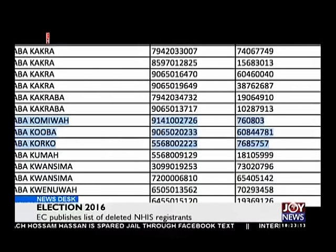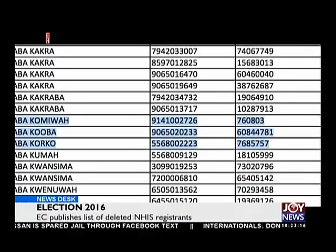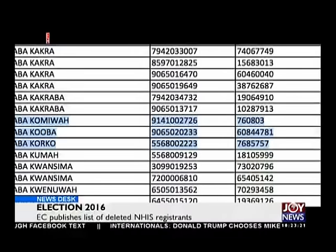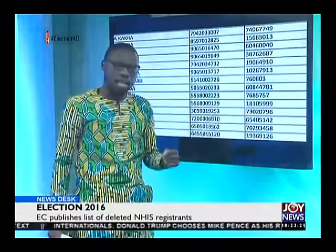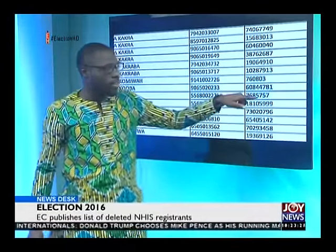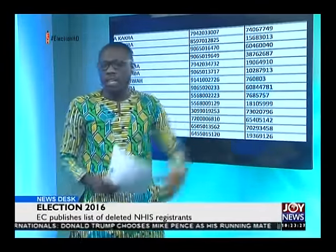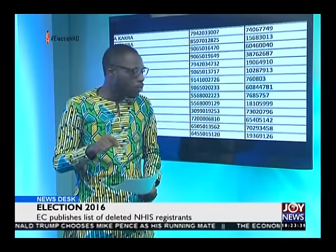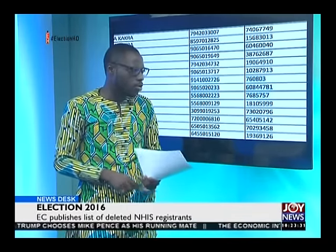In other instances we have seven digits; in some others, there are eight digits. For instance, in the second entry highlighted here, there are eight digits representing the National Health Insurance Card. In the third instance, there are seven digits representing the number for the National Health Insurance Card.